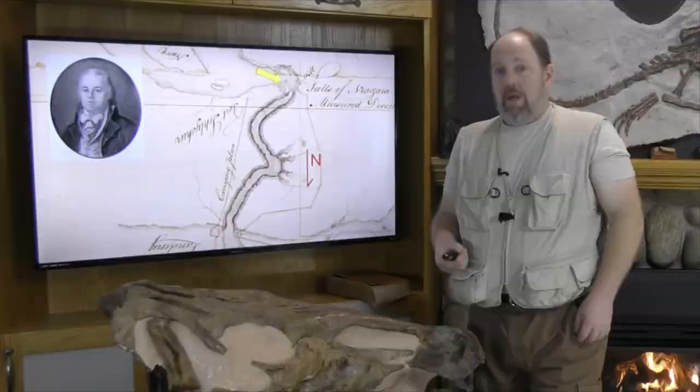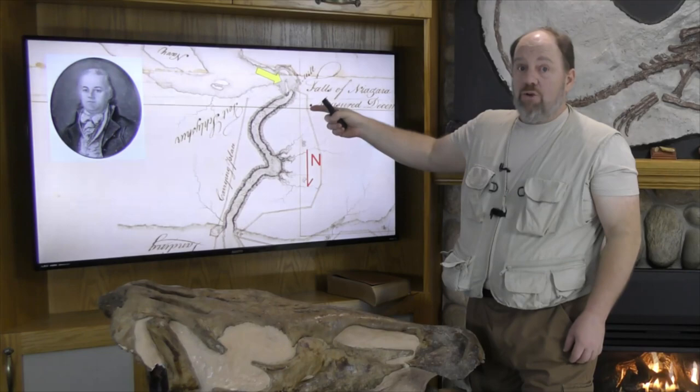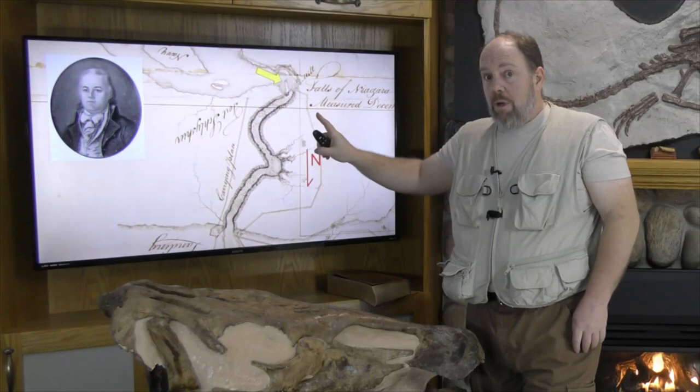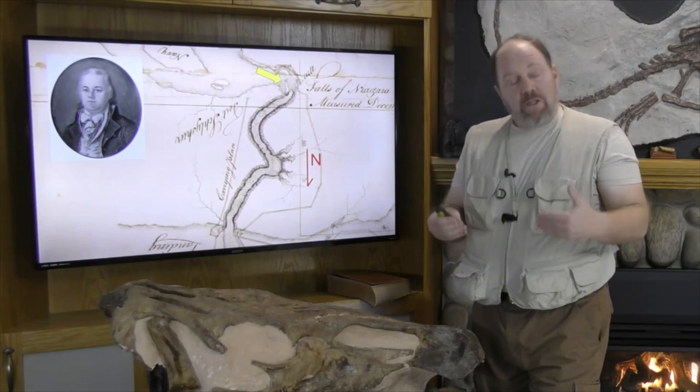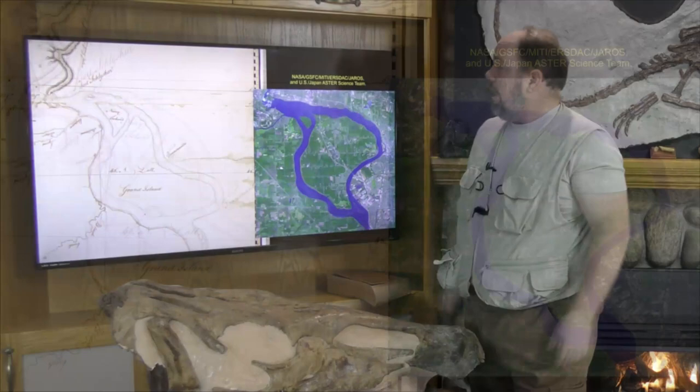Also bear in mind that at this time, the volume of water flowing over the falls was at least two to perhaps five times the modern day volume, and possibly more. As a result, there were radical changes in the shorelines, as can be seen when comparing Ellicott's map to the modern day river bed.